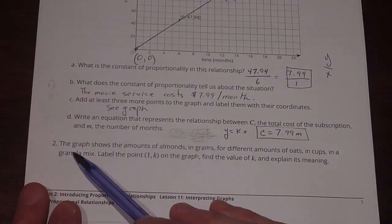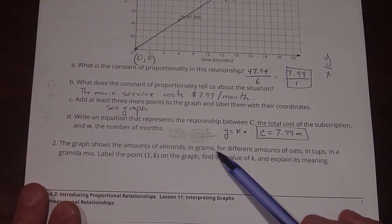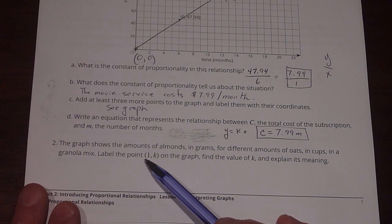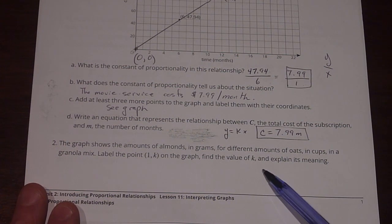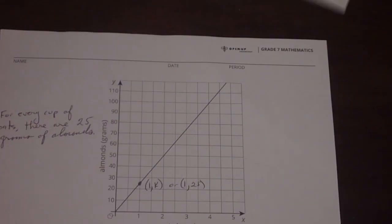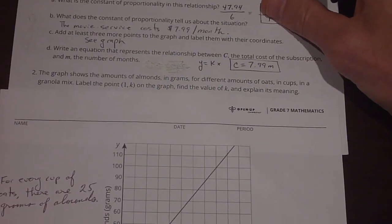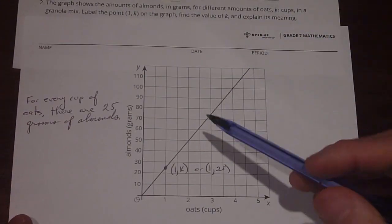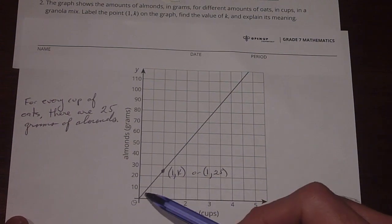Number two. The graph shows the amount of almonds in grams for different amounts of oats and cups in a granola mix. Label the point 1, k on the graph and find the value of k and explain its meaning. So let's see if I can get both in the picture here. All right, so we've got our graph here. And the question says, label the point 1, k.